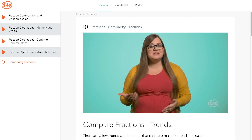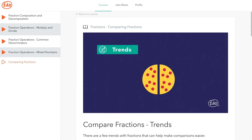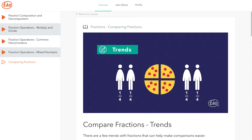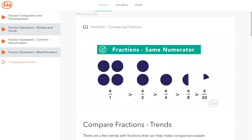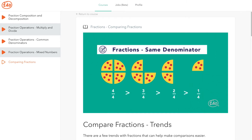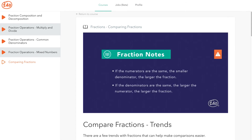If the numerators are the same, smaller denominators indicate larger fractions. A good example is sharing one pizza with two people versus four people — when we divide it among four people, each person gets fewer slices. This holds true for any numerator: four over four is smaller than four over one. If the denominators are the same, larger numerators indicate larger fractions. Imagine splitting one pizza into fourths: since three slices is more than one slice, three-fourths is more than one-fourth.